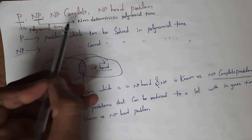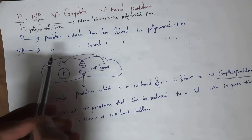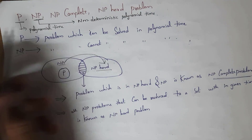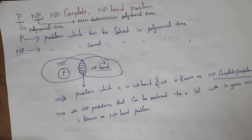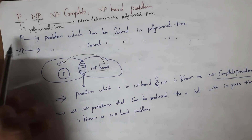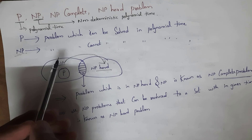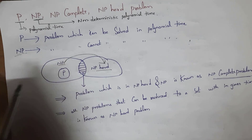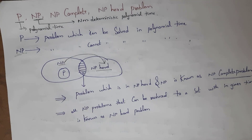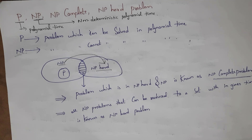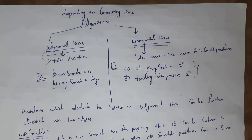Before knowing NP-hard and NP-complete problems, you need to know what a P problem and an NP problem are. A problem which can be solved in polynomial time is known as a P problem, and a problem which cannot be solved in polynomial time is known as an NP problem. For example, if a problem is given and I solve it within the given polynomial time, it is a P problem; if I can't, it is an NP problem.